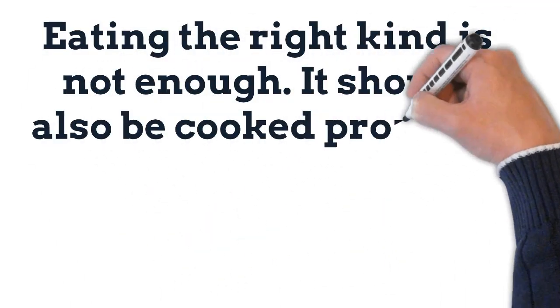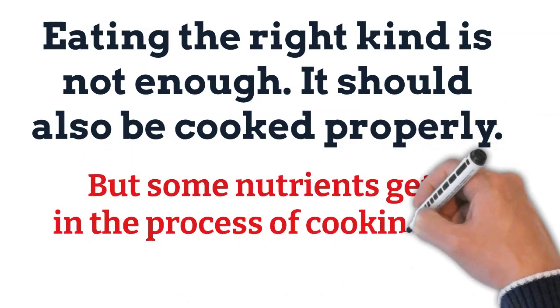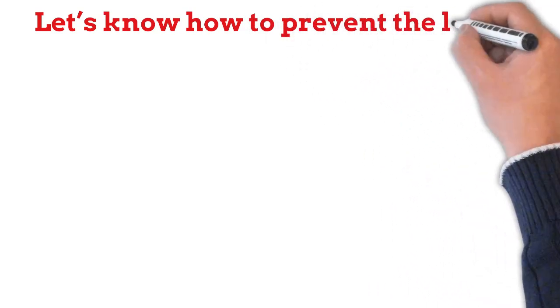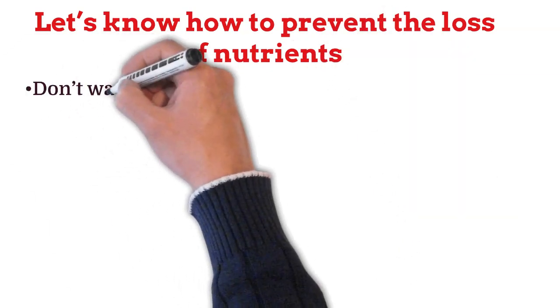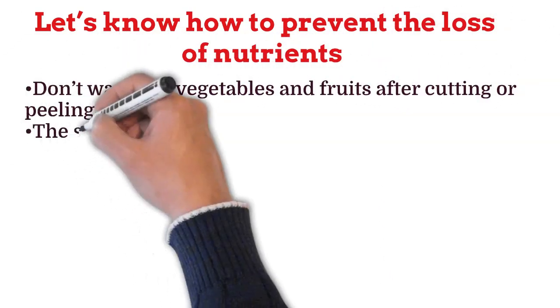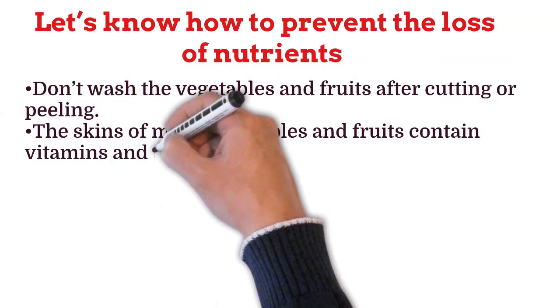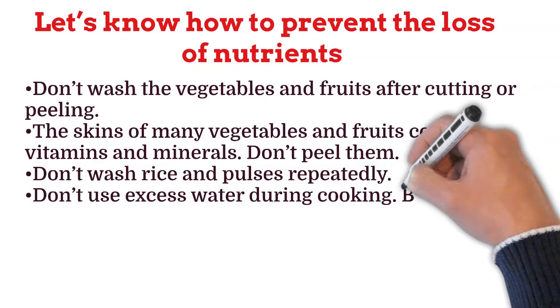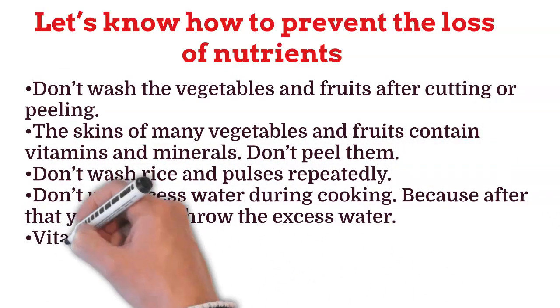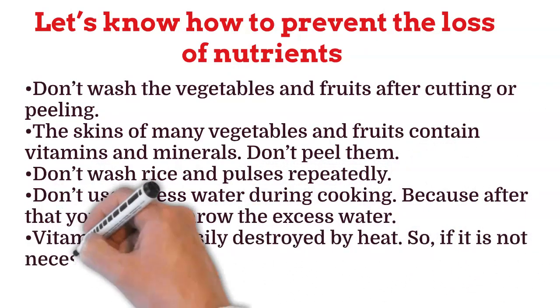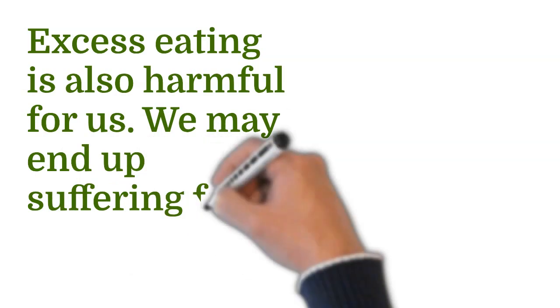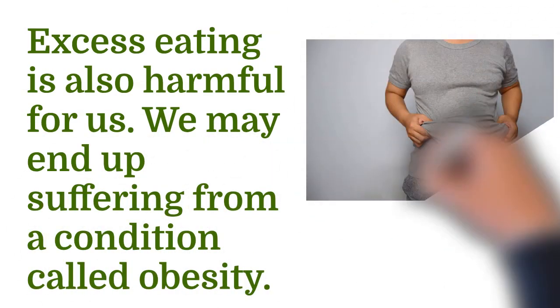Eating the right kind of food is not enough — it should also be cooked properly. But some nutrients get lost in the process of cooking and preparation. To prevent loss of nutrients: don't wash vegetables and fruits after cutting or peeling; the skins of many vegetables and fruits contain vitamins and minerals, so don't peel them. Don't wash rice and pulses repeatedly. Don't use excess water during cooking, because then you have to throw the excess water. Vitamin C gets easily destroyed by heat, so if not necessary, consume them in raw form. Excess eating is also harmful and may lead to a condition called obesity.